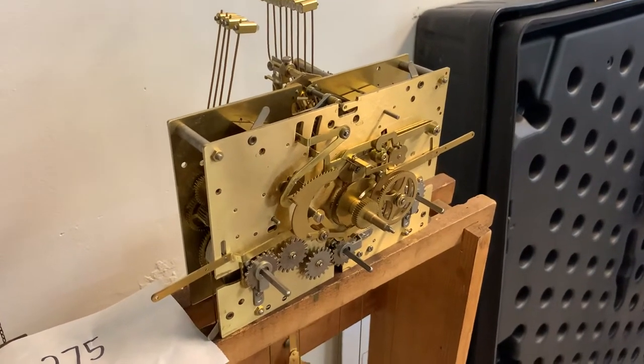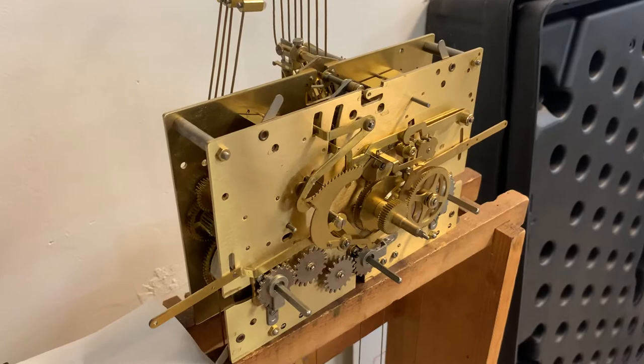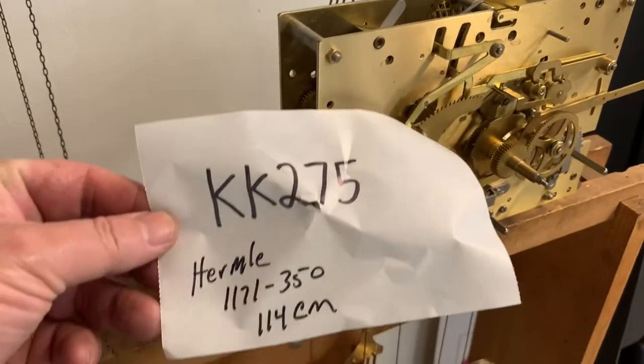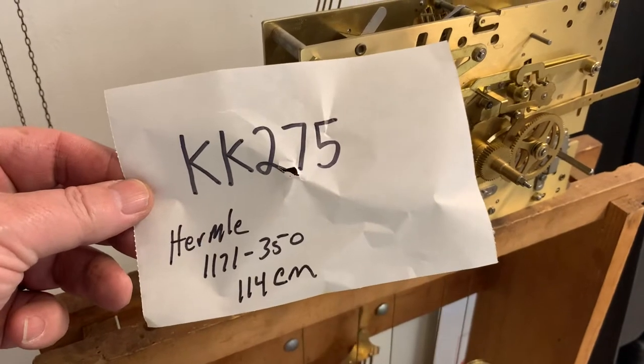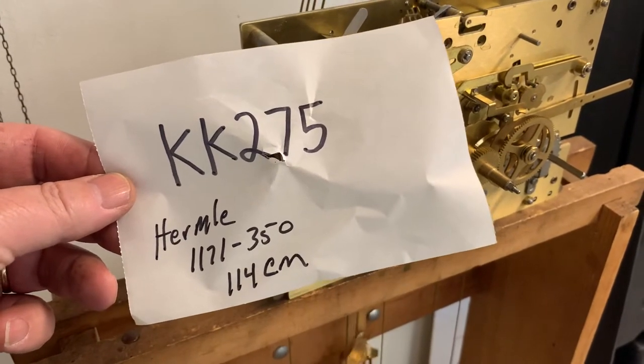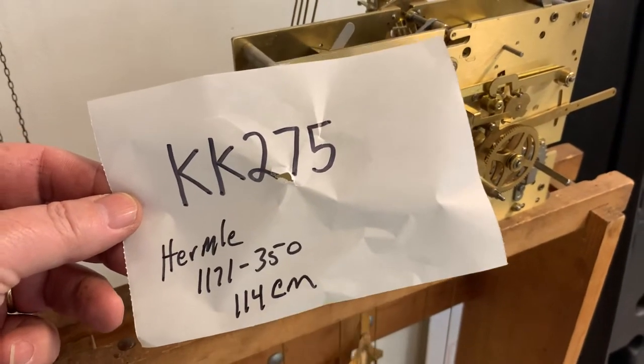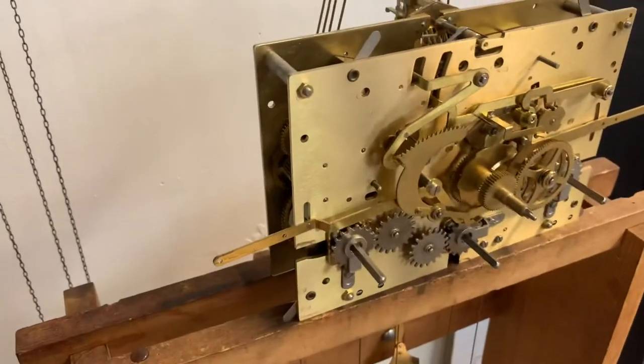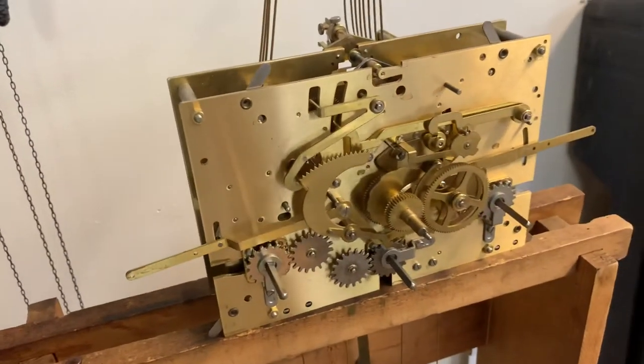Hi everyone, welcome back to my YouTube channel. This is Jim with JR Clocker on eBay. Today we have a Hermle 1171-350. It's 107... 114 centimeters. This is a reference number KK275.